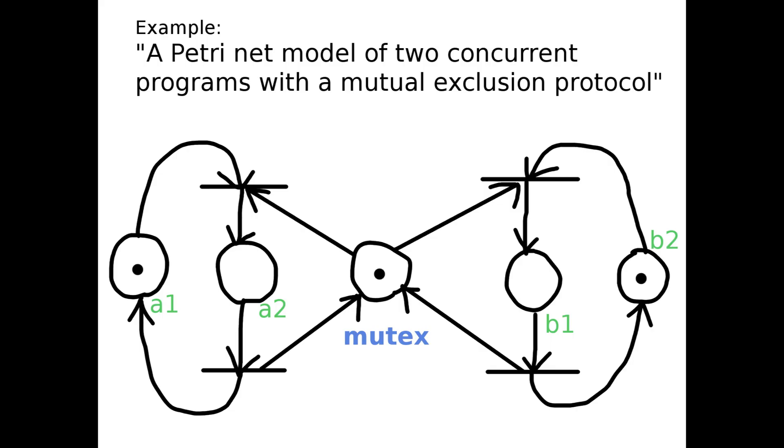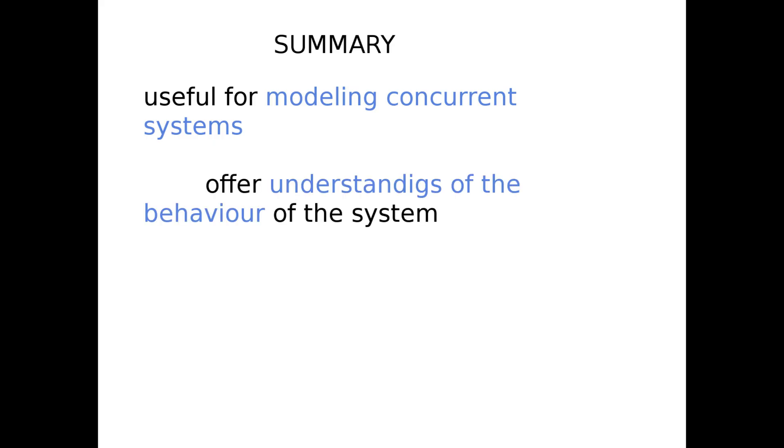With the initial marking as shown, both transitions are enabled, and the one that fires is chosen non-deterministically. Petri nets are very useful for modeling concurrent systems—a concurrent system is a system where many entities act at the same time and interact. They offer a good understanding of the system flow.